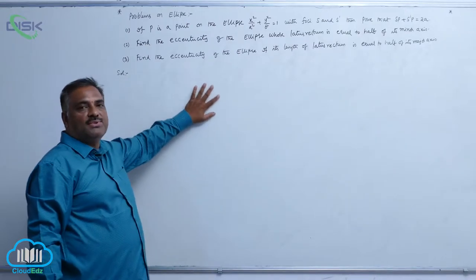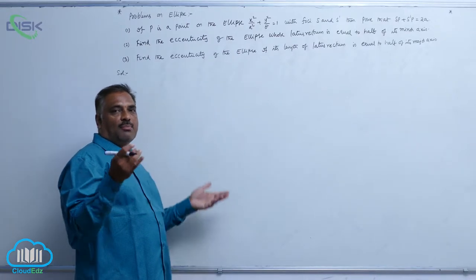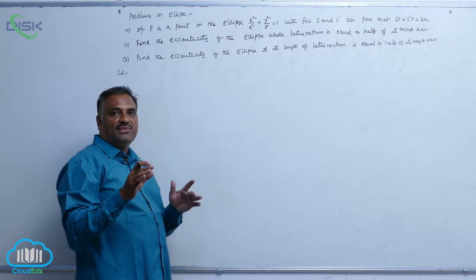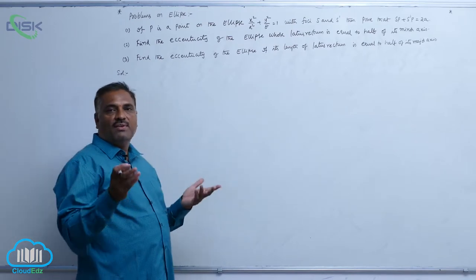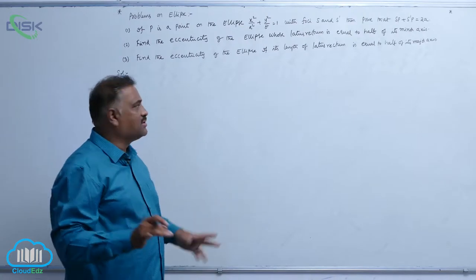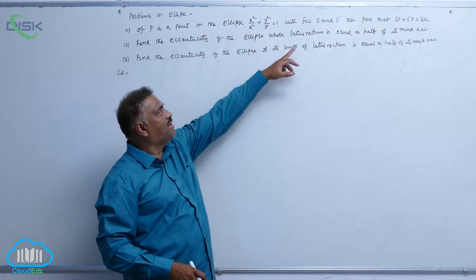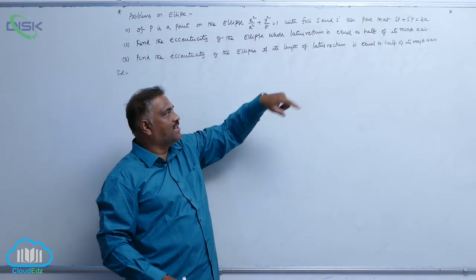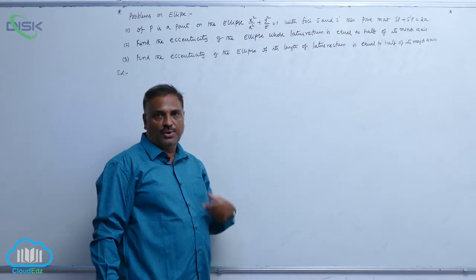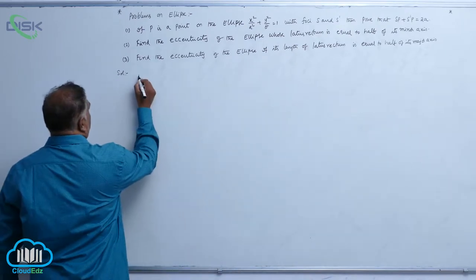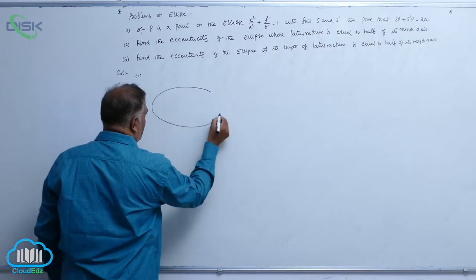We'll discuss problems on ellipse now. If it is not mentioned specifically, we always take the standard equation of ellipse. If P is a point on the ellipse with foci S and S', prove that SP plus S'P equals 2a. Let us take the first problem and consider the ellipse equation.